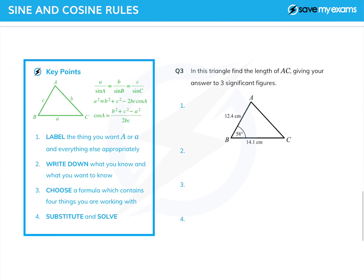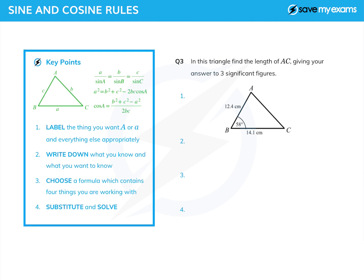I'll do one more question, which is slightly different. The triangle is already labelled ABC but I'm going to relabel. I'm going to call the length of AC x, so I've got a letter to refer to later, and that's what I want to know. I'll label the triangle big A and little a, leave C as it is, call that side little c, and change the A that was there to B. Now: big A is 58, little b is 14.1, little c is 12.4, and I'm trying to find little a, which I've also called x.